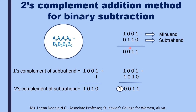We can perform the same subtraction using the two's complement addition method. For this, we take the one's complement of the subtrahend. For getting this one's complement, change zeros into ones and ones into zeros. So the one's complement of 0110 is 1001. Then add 1 to this one's complement to get the two's complement of the subtrahend. 1001 plus 1 gives 1010. That is the two's complement of our subtrahend.